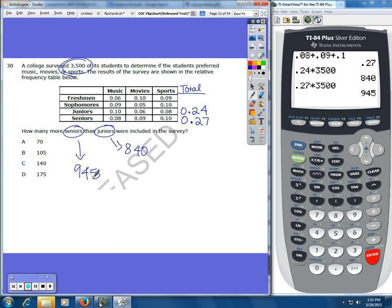For the seniors I'm going to do 0.27 times 3,500 and that will give me the number of seniors. So that's 945. The question is how many more seniors than juniors. So you're going to do the seniors minus the juniors. That will give you 105. So there were 105 more seniors than juniors.